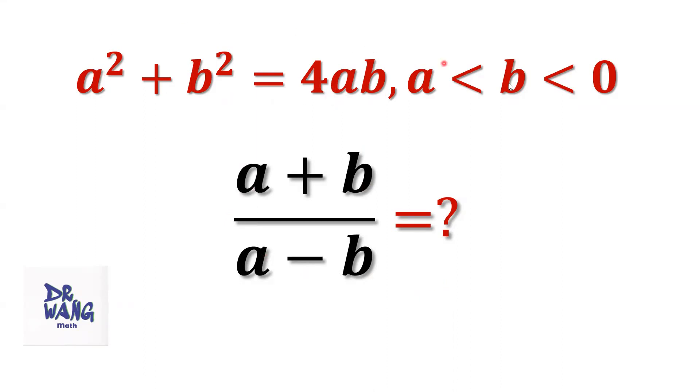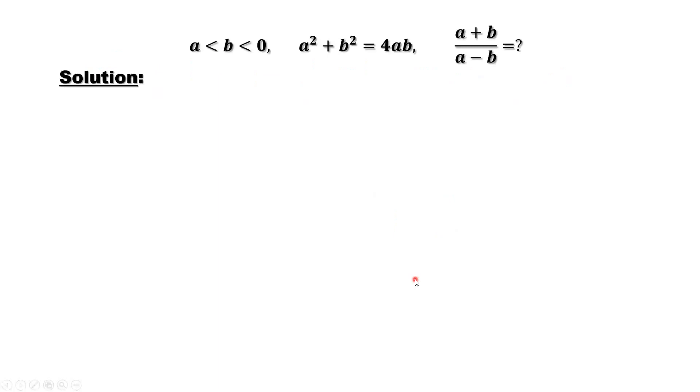From the given conditions, can we derive a plus b and a minus b? Use this given condition. We want to convert the left-hand side to be a squared. What can we do? Both sides plus 2ab.